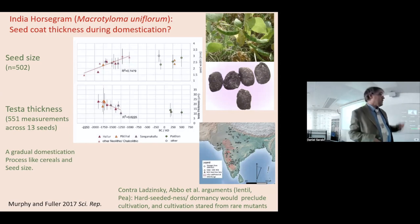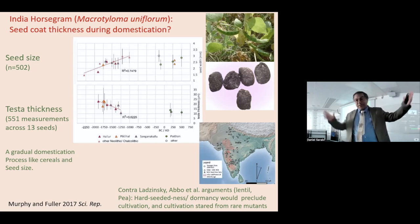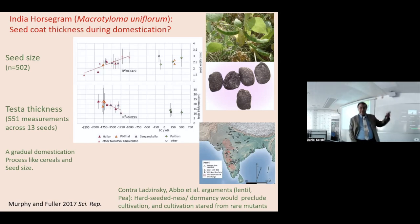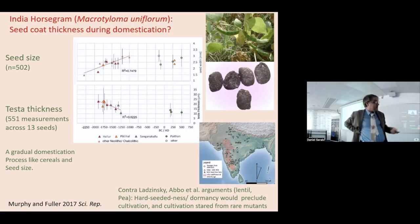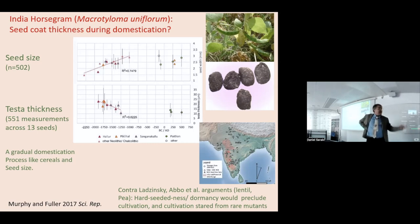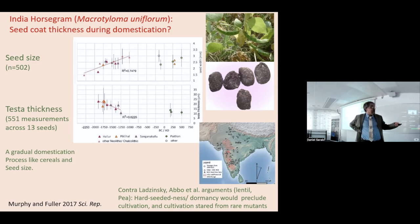We published that initially in Scientific Reports. We didn't have a very big sample size — it was 13 seeds — but from those 13 seeds we got 550 measurements. The thing we didn't do, which you would do today, is segment the images — we took slices and measured manually around them. From those data you can see that seeds are getting bigger and seed coats are getting thinner. We had a domestication sequence for horsegram. We then went back and had a second beam time session to do more horsegram, some Chinese Chenopodium, some lentils from the Near East, and a sequence of Chinese soybeans.